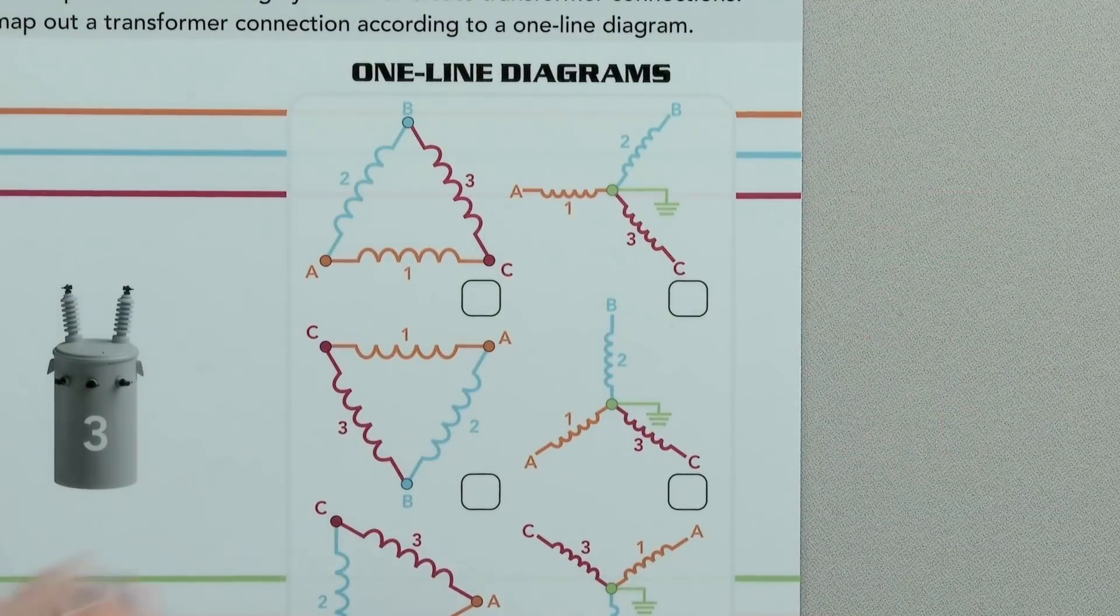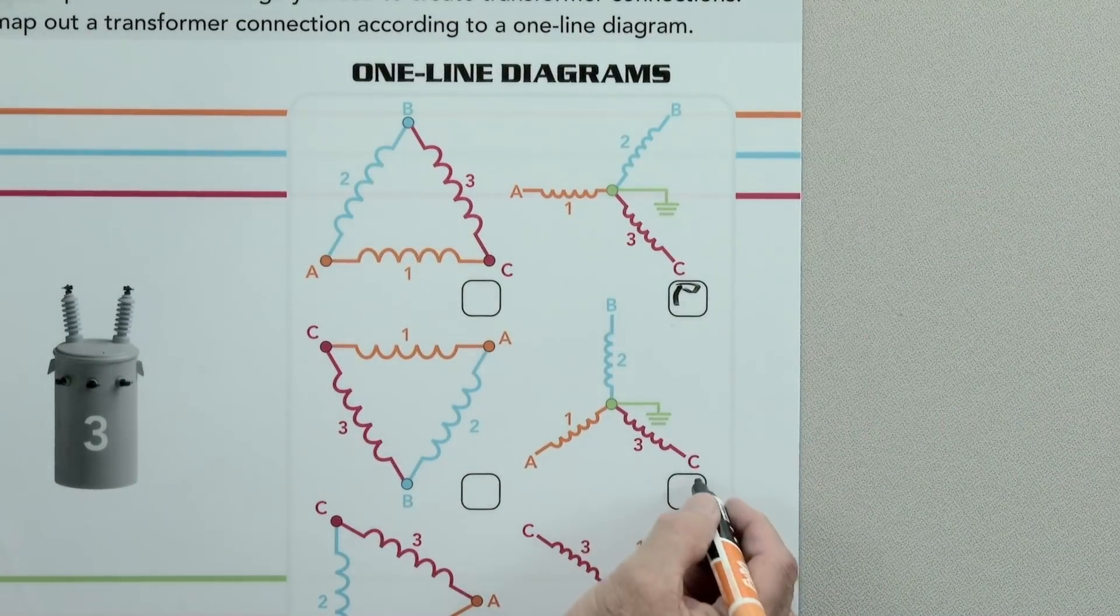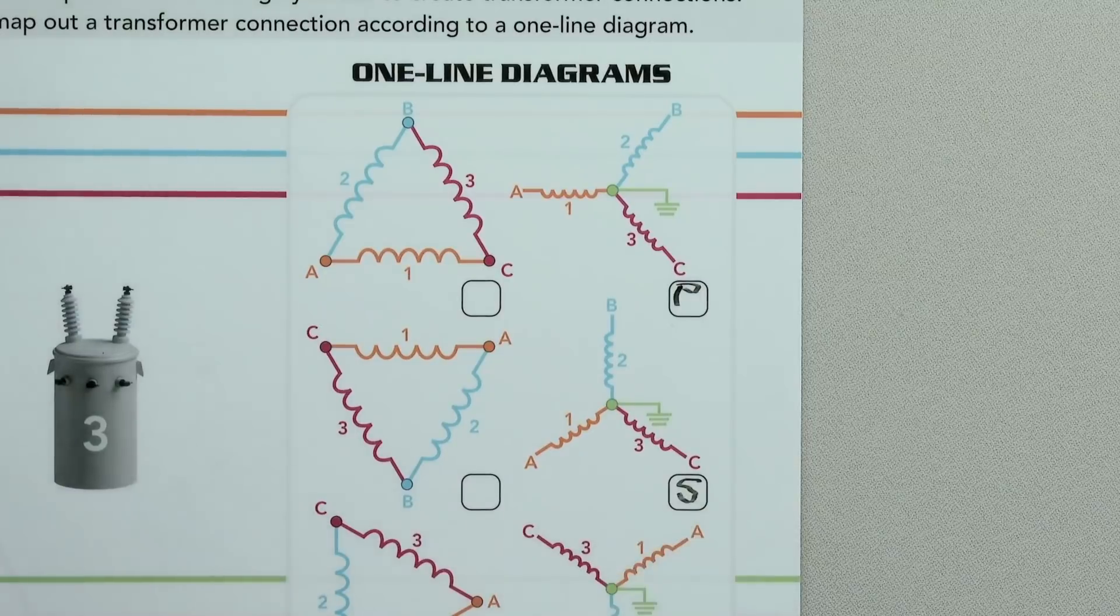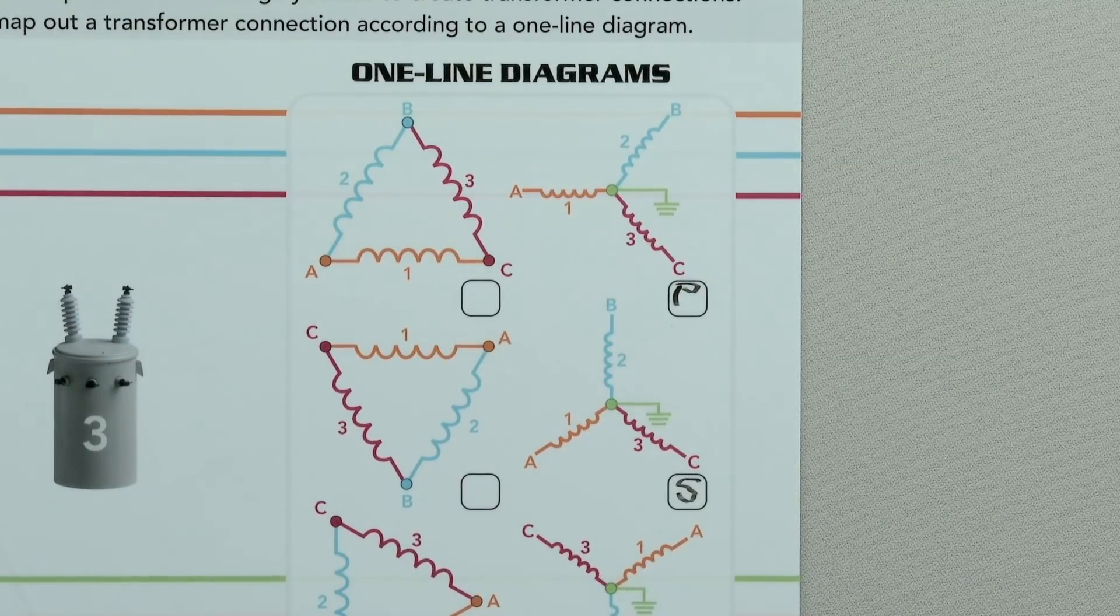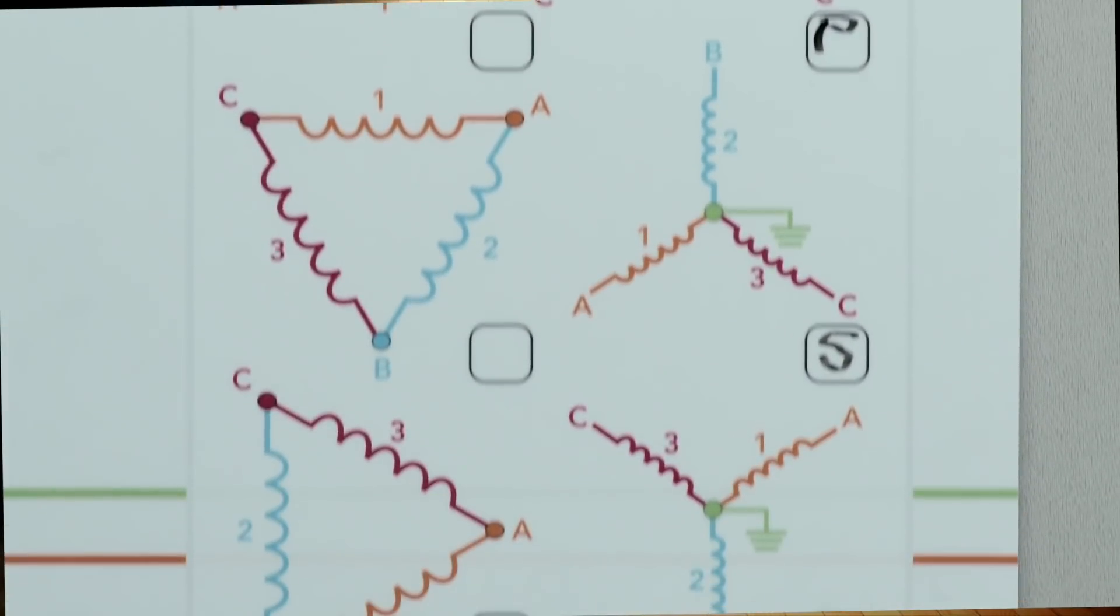Next, in this area, you'll see a series of standard configurations of one-line diagrams at varying positions. The instructor will mark a P or an S in the box next to a diagram to represent primary and secondary connections.